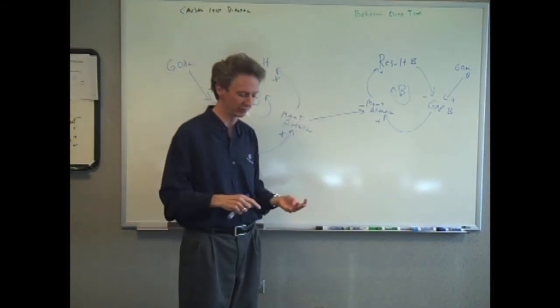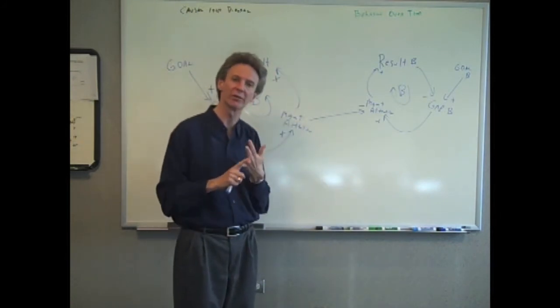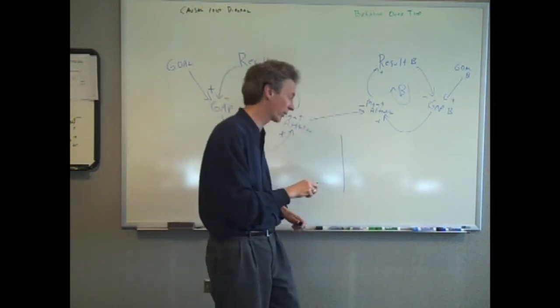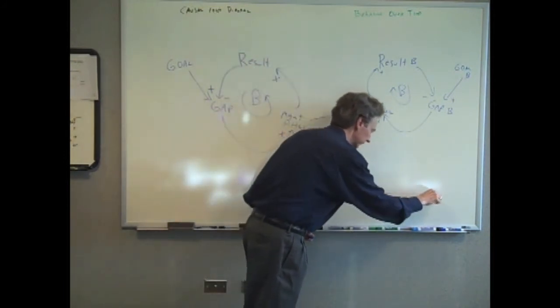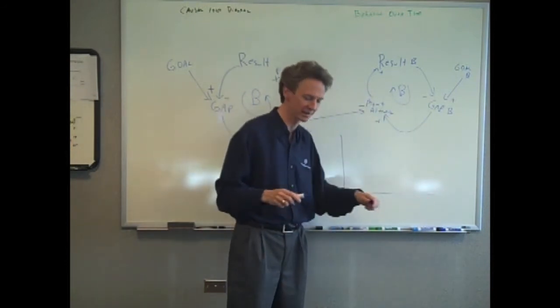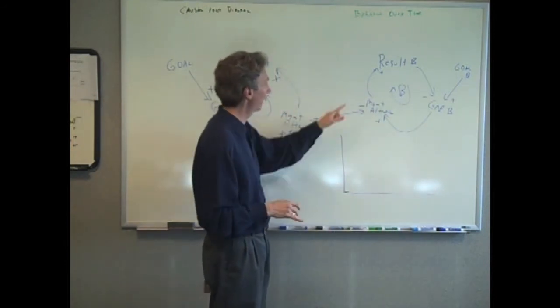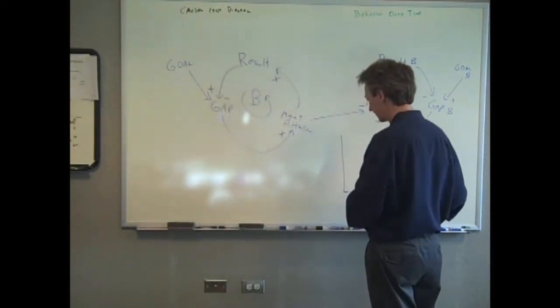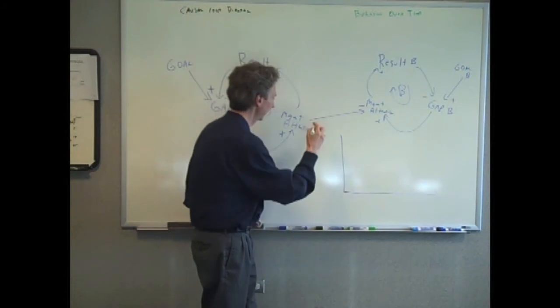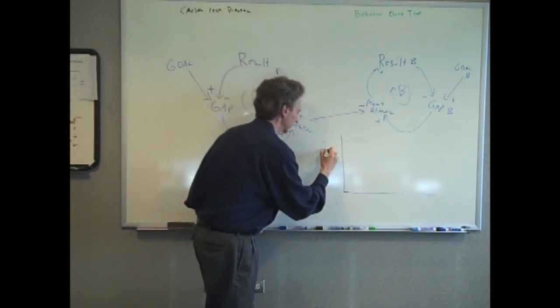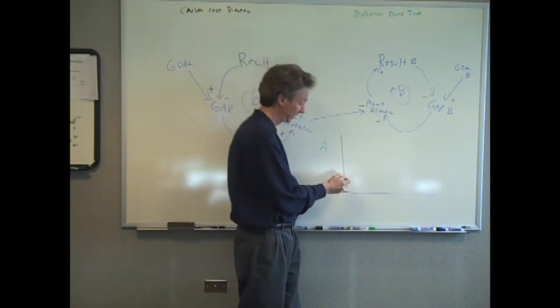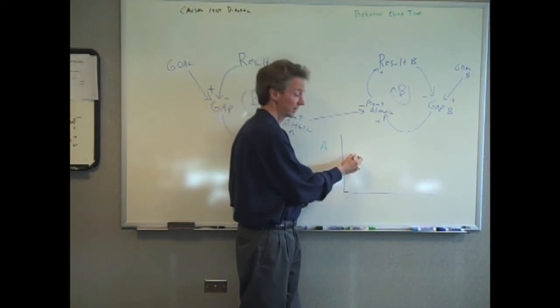Now the last thing I am going to do, we do causal loops, then we do behavior over time graphs. So let's do the behavior over time graph. So let's time along this dimension. And let's just graph the two results. Okay. So result A we will do in green, this first result. And let's say it starts out poor. So you apply management attention to it. And the results improve.